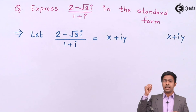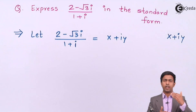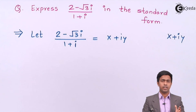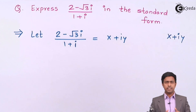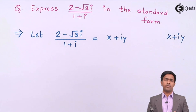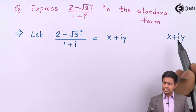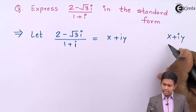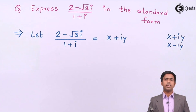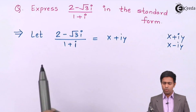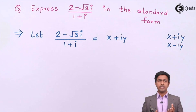To get a single real part and single imaginary part, there is one trick: whenever we have two complex numbers, one in the numerator and one in the denominator, we should always try to remove the denominator. To remove a complex number from the denominator, we multiply it with the conjugate of that number. If the complex number is x + iy, its conjugate is x - iy, and vice versa.